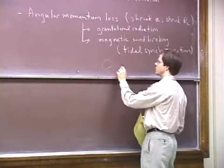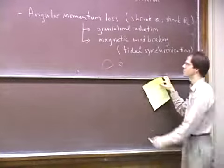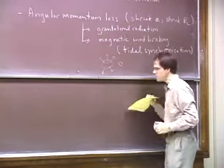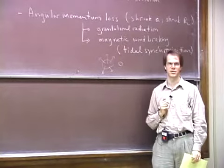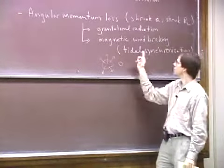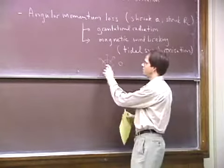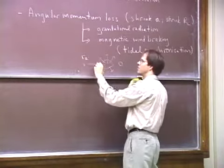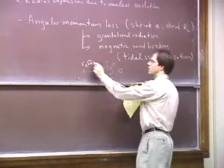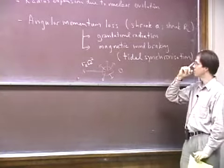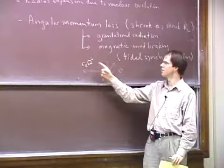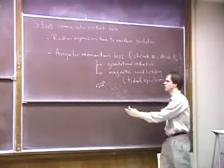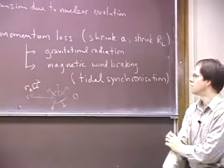If the star is tidally locked so its rotation period equals the orbital period, and has a magnetic wind, the angular momentum removed is the mass-loss rate in the wind times the Alfvén radius squared times omega. For the Sun, the Alfvén radius is 10 to 20 times the stellar radius. This J-dot removes angular momentum just as in the gravitational radiation case.